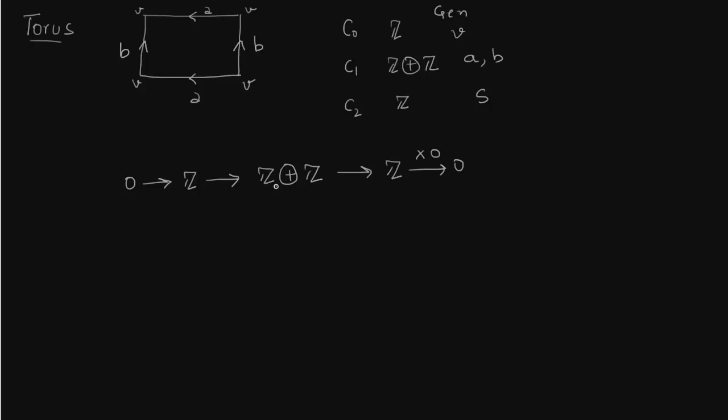Delta zero is just multiplication by zero. We have to find delta one. So delta one of a is, as before, v minus v which is zero. It's the same as delta b. So this map is multiplication by zero.